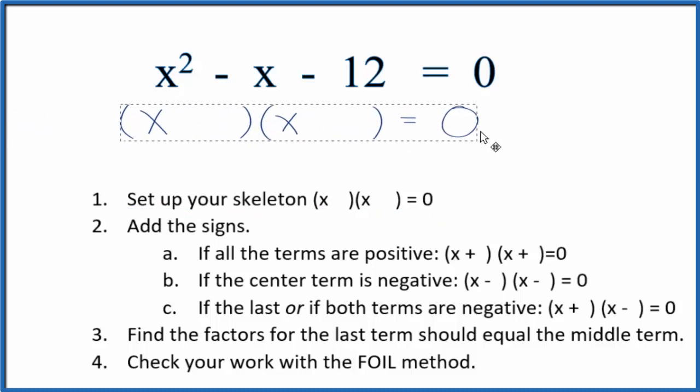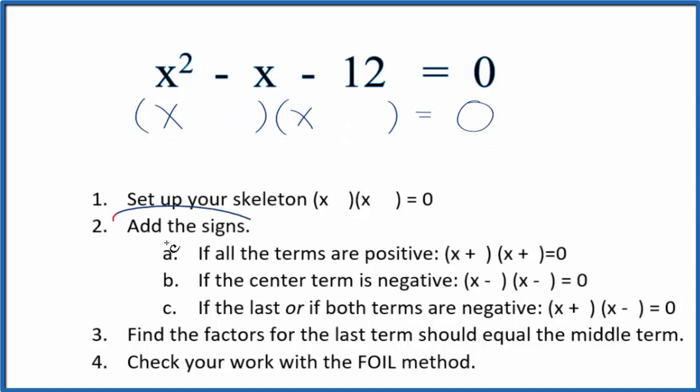That'll look like this right here. Next, we want to add the signs into our skeleton equation. We see up here we have a negative and a negative. If both of the terms are negative, we'll put a positive and a negative inside the parentheses. So let's put a positive here and a negative.